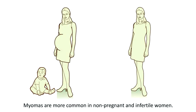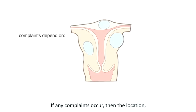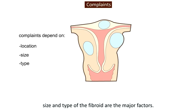Myomas are more common in non-pregnant and infertile women. In general, fibroids are asymptomatic or associated with just a few complaints. If any complaints occur, then the location, size and type of the fibroid are the major factors.